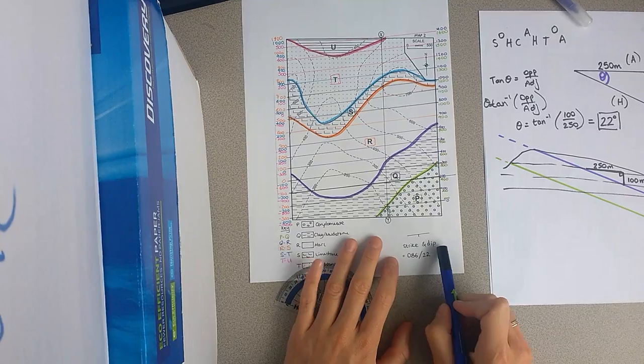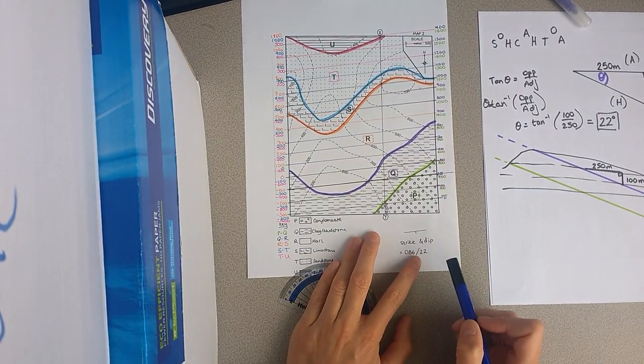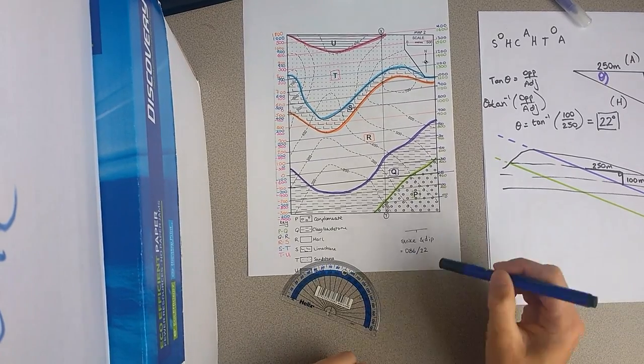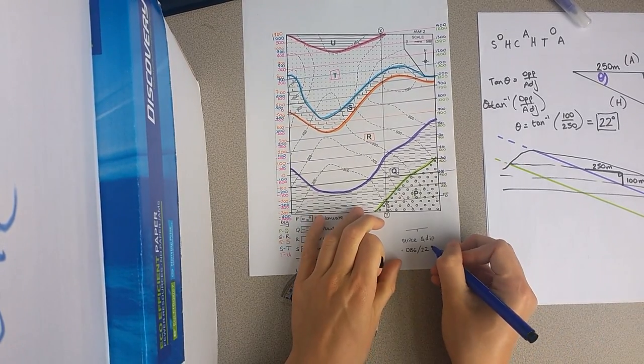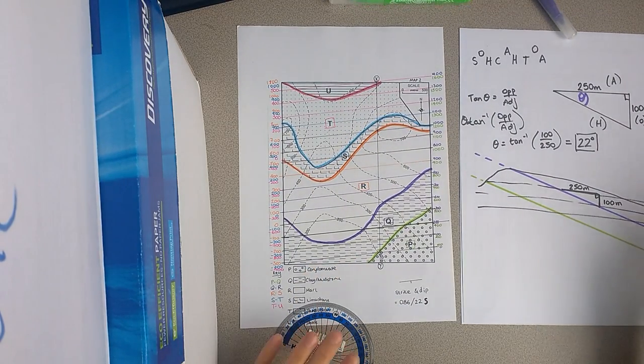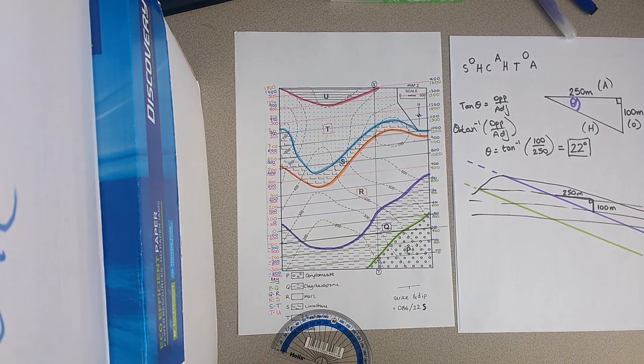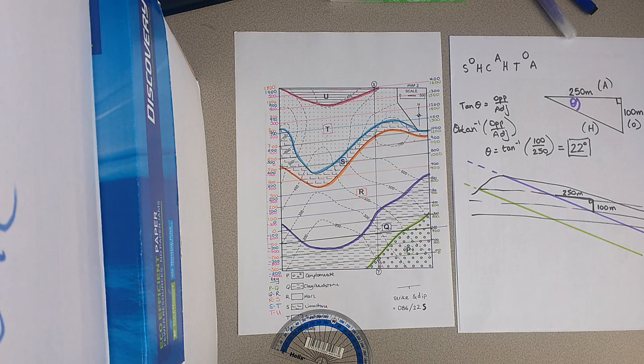So our strike and dip is 86, and we always write that as three digits, so 086, with a dip of 22, and that is going to the south. Okay, so if you try your map number two now, you should be able to get this strike and dip of 86 degrees is the strike, and then dipping 22 degrees to the south.